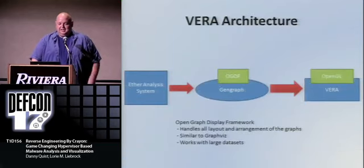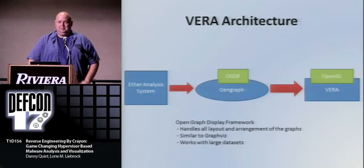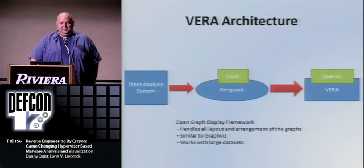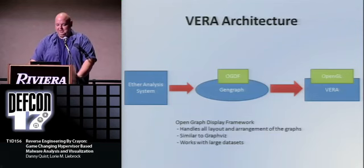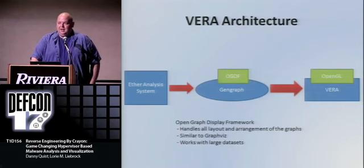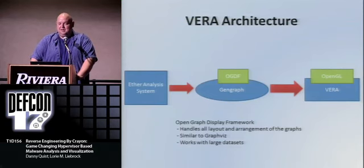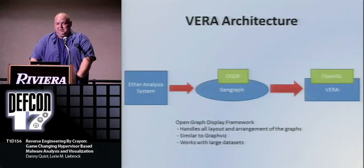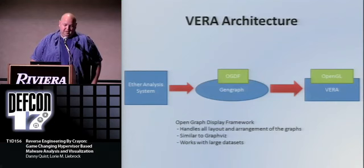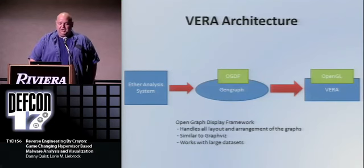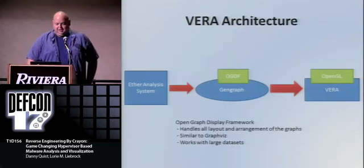The architecture: the Ether analysis system plugs into a program that takes trace files and generates graphs using the OGDF — Open Graph Display Framework. OGDF makes decisions about where to place and locate vertices. It's similar to GraphViz but works with large data sets — I've had millions of vertices and it hasn't choked, though it will use all your memory. Finally, Vera is the OpenGL component that displays the graph and allows you to analyze it.